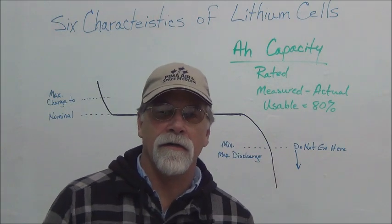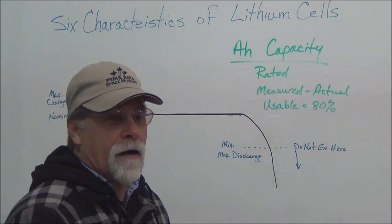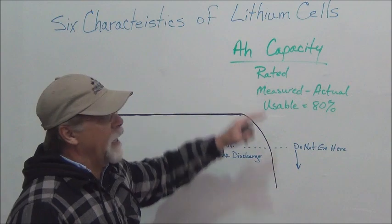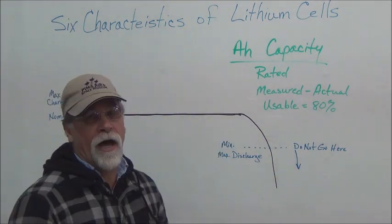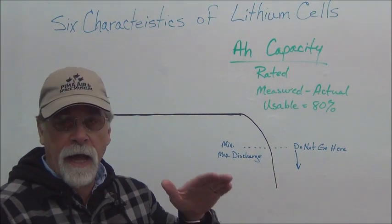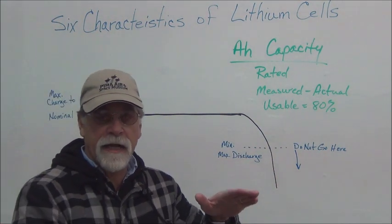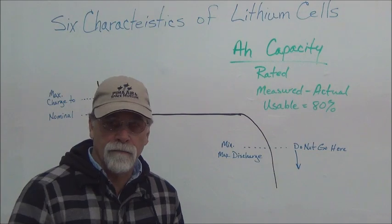The other three characteristics I want to talk to you about today regard amp hour capacity. Now, with the amp hour capacity, you have the rated value. So if you have a 100 amp hour cell, that's what they sell it as, that's what it's labeled as.